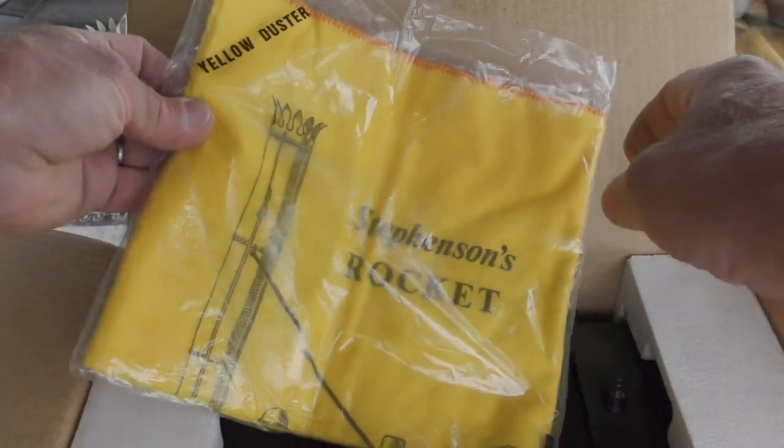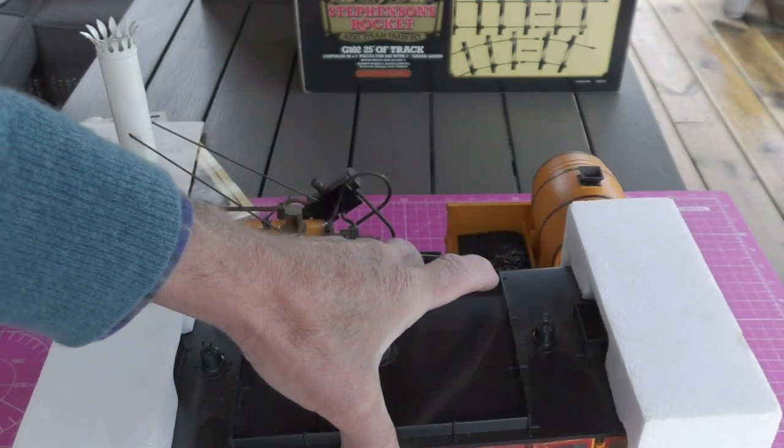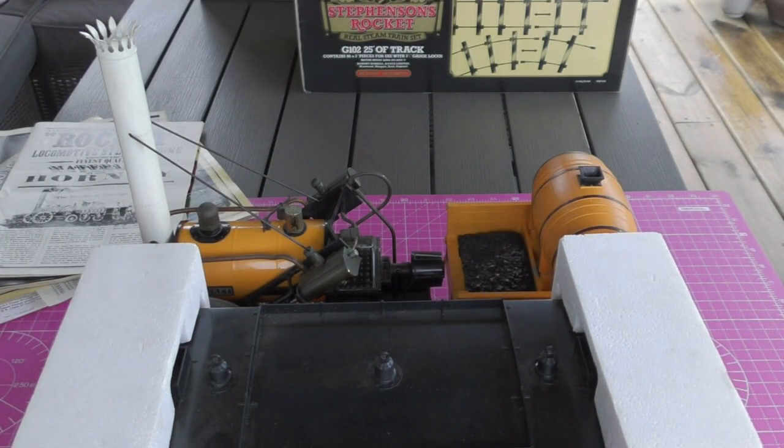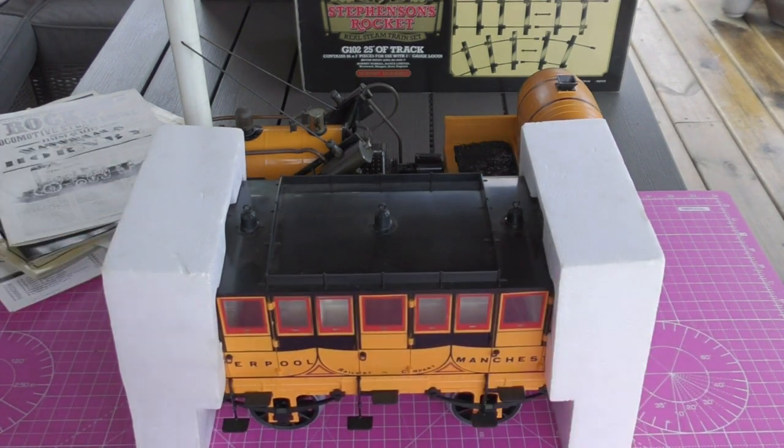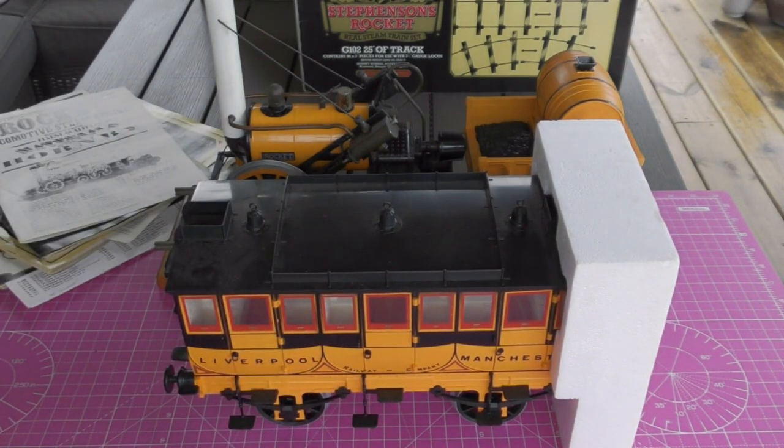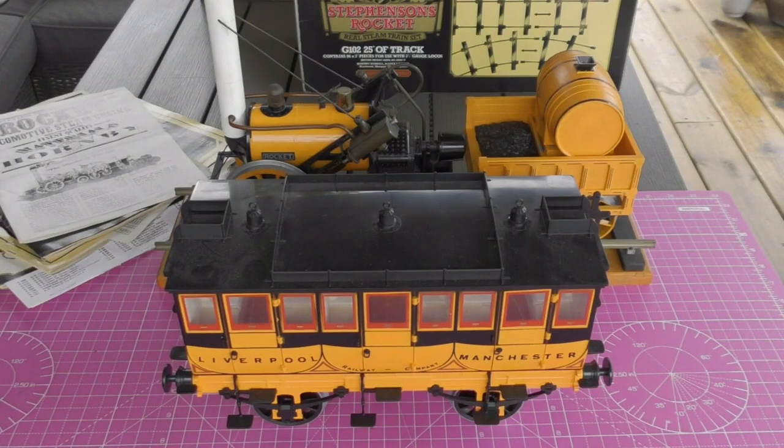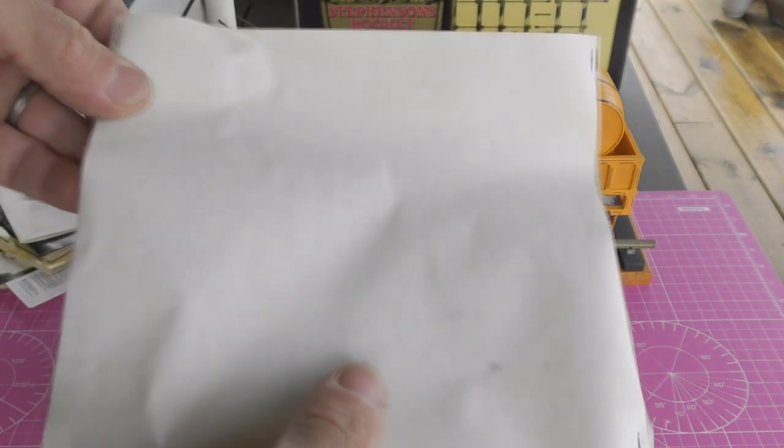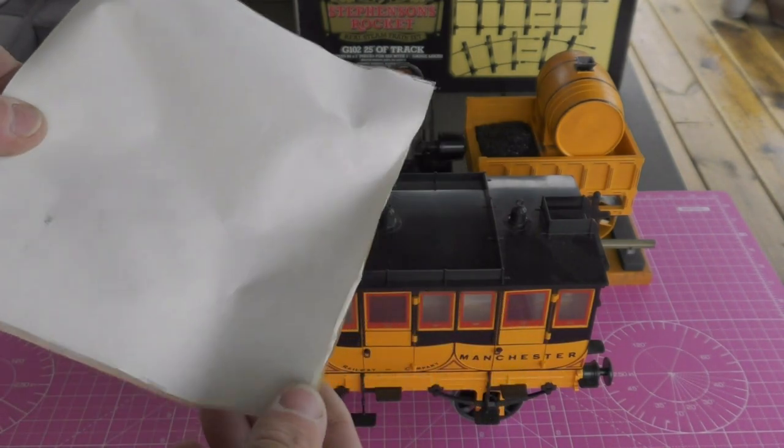Seems to be a pair of those. And here we have another duster, look at this, Stephenson's rocket. I imagine they have come from a visit out at some time. Let me see now whether I can lift it out of the box and get it into view. I'm just going to put it in front of the loco, just bear with me a second while I move a couple of items.